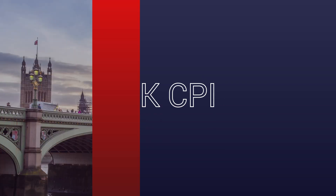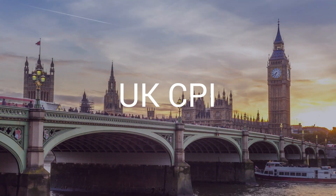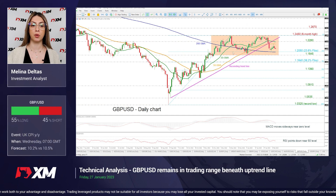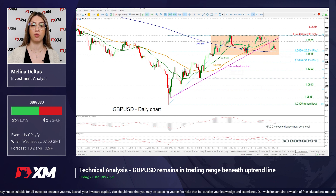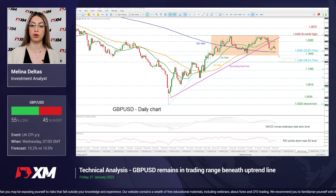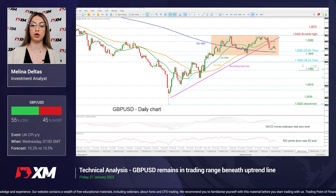The UK CPI is predicted to decline to 10.2% versus 10.5%. The price is holding within this trading range and is moving above the 200 SMA and the 23.6% Fibonacci level of this upswing at 1.2015. If the price drops below the 200 SMA, it may move towards 1.1845, and a drop below that will switch the outlook to bearish, meeting the 38.2% Fibonacci level of 1.1640.